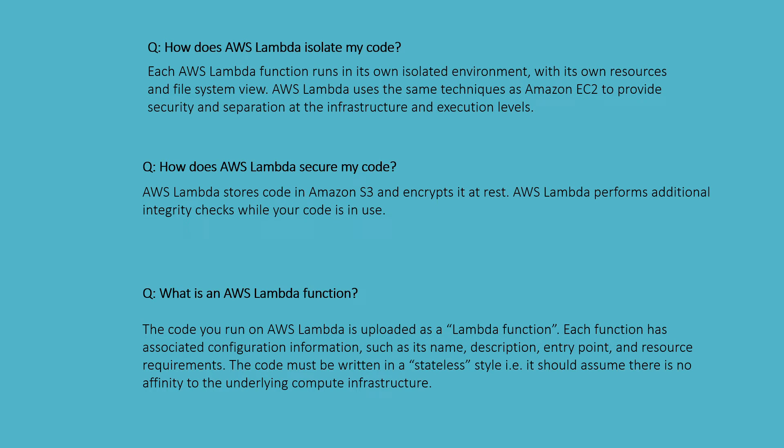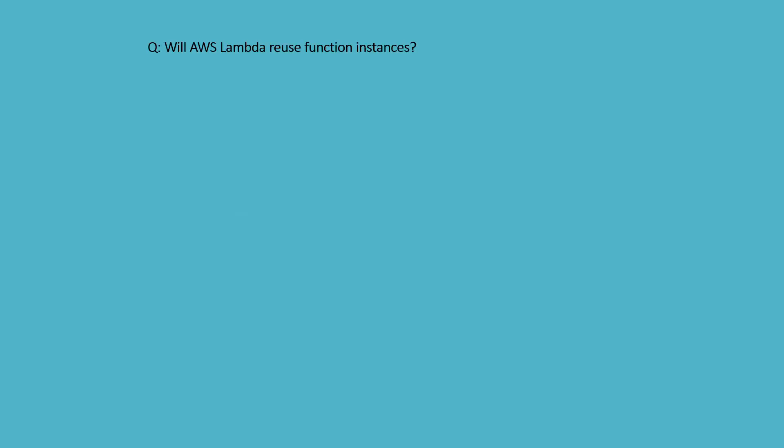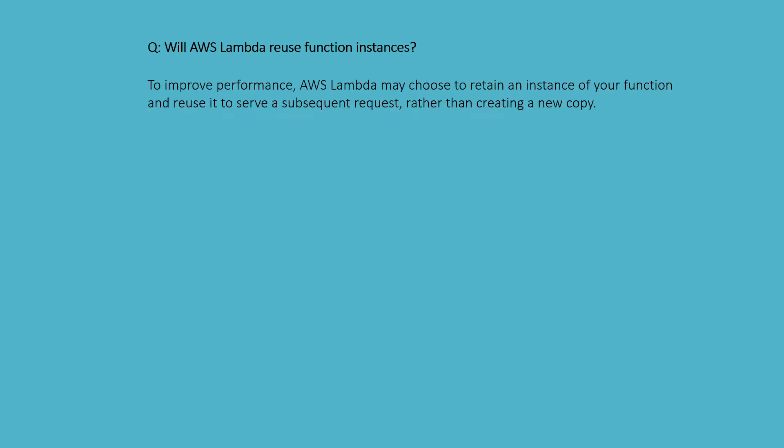The code you run on AWS Lambda is uploaded as a Lambda function. Each function has associated configuration information such as its name, description, entry point, resources, and environment. The code must be written in a stateless style and should assume there is no affinity to the underlying compute infrastructure. AWS Lambda may choose to retain an instance of your function and reuse it to serve subsequent requests rather than creating a new copy.